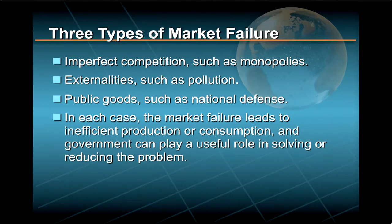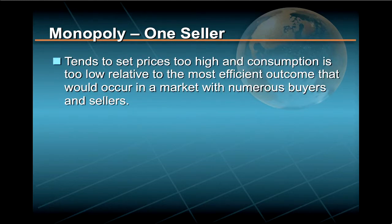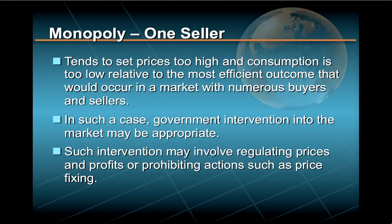In each case, the market failure leads to inefficient production or consumption, and government can play a useful role in solving or reducing the problem. For example, when there is only one seller in the marketplace — a monopoly — that seller tends to set prices too high and consumption is too low relative to the most efficient outcome that would occur in a market with numerous buyers and sellers. In such a case, government intervention into the market may be appropriate, and such intervention may involve regulating prices and profits or prohibiting actions such as price fixing.